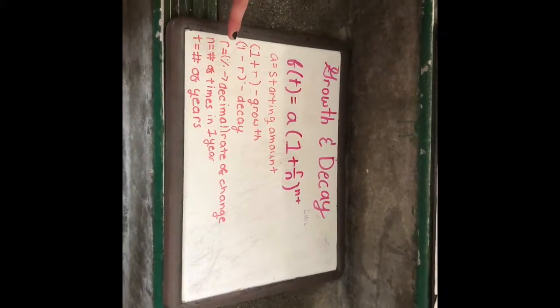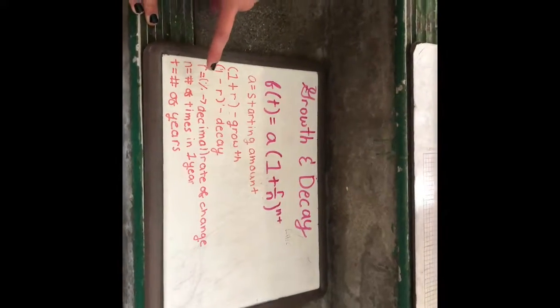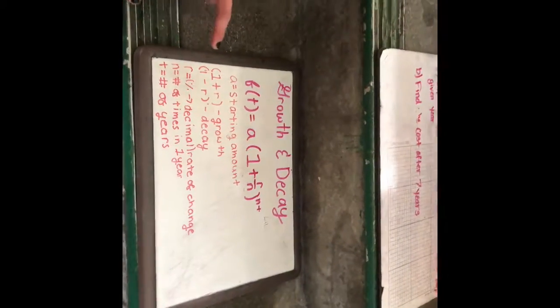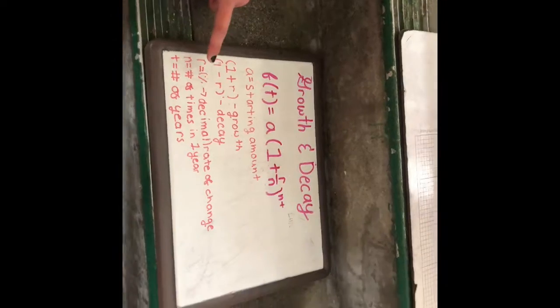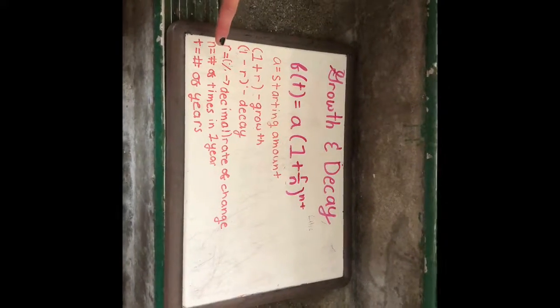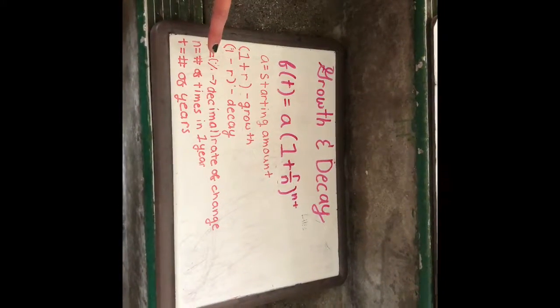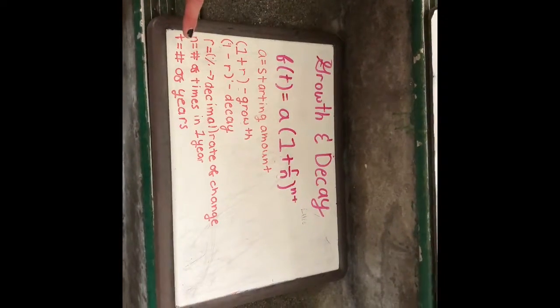r equals the rate of change, and in order to find this you have to convert the percentage to a decimal. n equals the number of times in a year, and t equals the number of years.